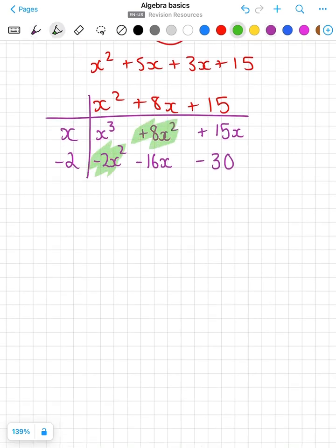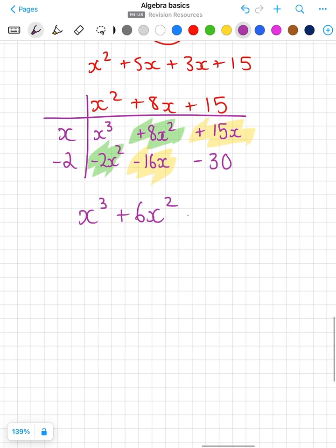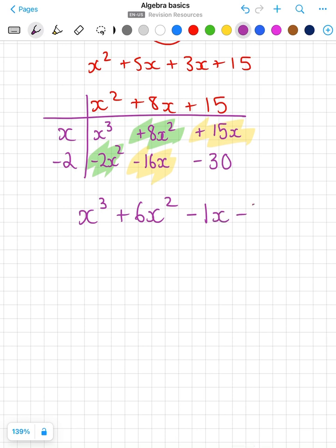Collect any like terms, so the x squareds go together and the x's go together. So that's x cubed plus 8x squared minus 2x squared is plus 6x squared, plus 15x minus 16x is minus 1x, minus 30.